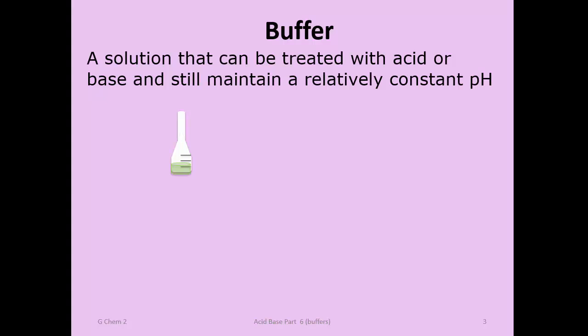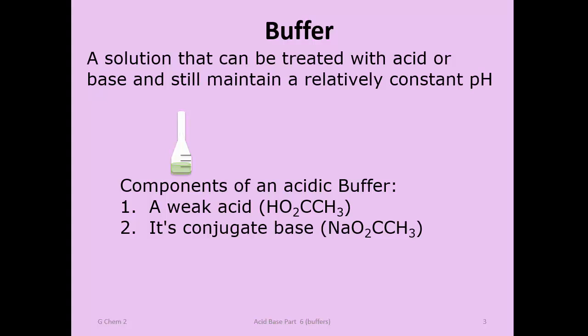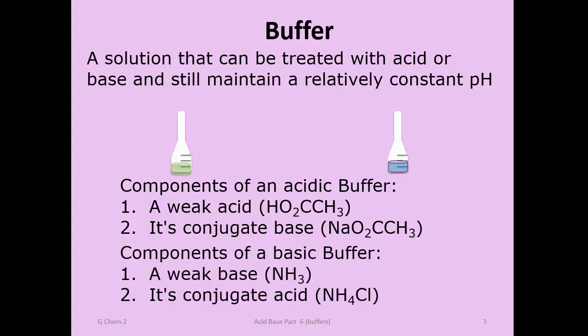To make an acidic buffer, you start with a weak acid and add its conjugate base—the key is a conjugate acid-base pair with equilibrium favoring the weak acid. To make a basic buffer, you do the opposite: choose a weak base and add its conjugate acid. For example, you could start with ammonia and the conjugate acid would be ammonium chloride—the chloride is insignificant, it's a spectator ion. The key is that the base has a stronger equilibrium, making it a basic buffer.